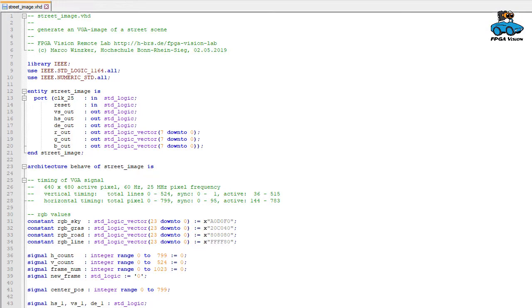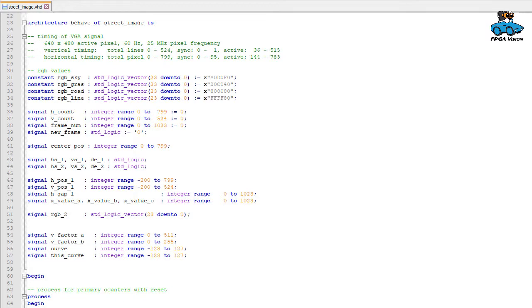Here we have the VHDL description of the image generator. We have here the entity which has as an input the clock signal and the reset signal. The output are the sync signals and the red, green, blue values. Then we have the constants and signals. Here are some constants that define colors. We will see later on what that is used for. And then we have more signals that we will use for our functionality.